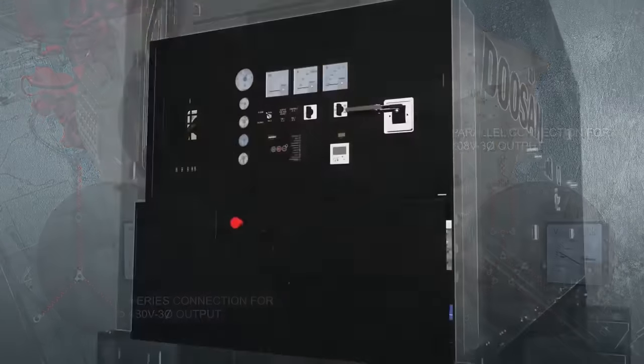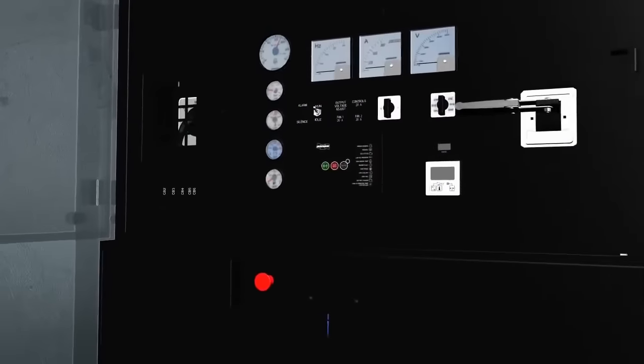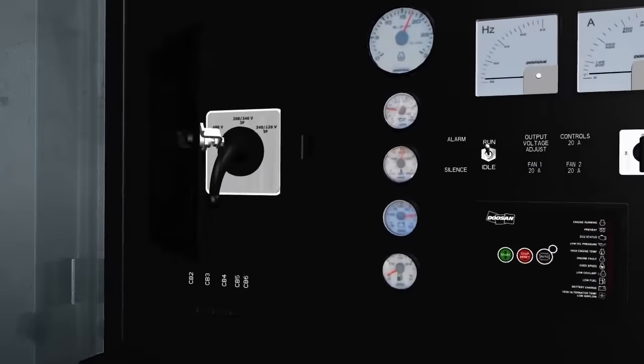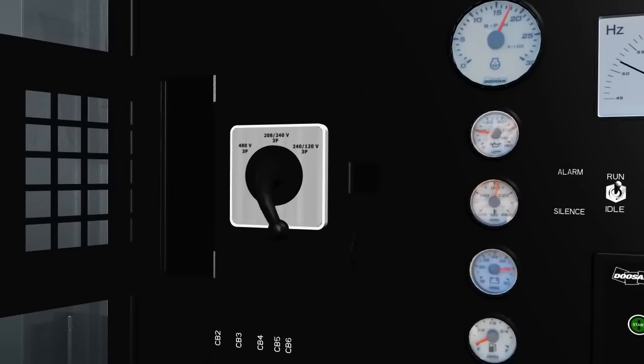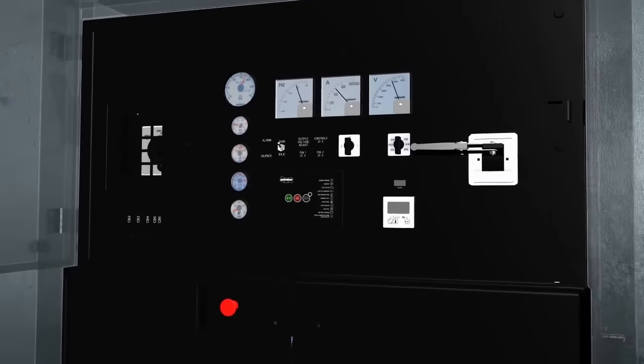To simplify wire connections, Doosan Mobile Generators have a convenient selector switch. When an operator selects the desired voltage, the switch adjusts the connections and current flows through a protective device called a circuit breaker.